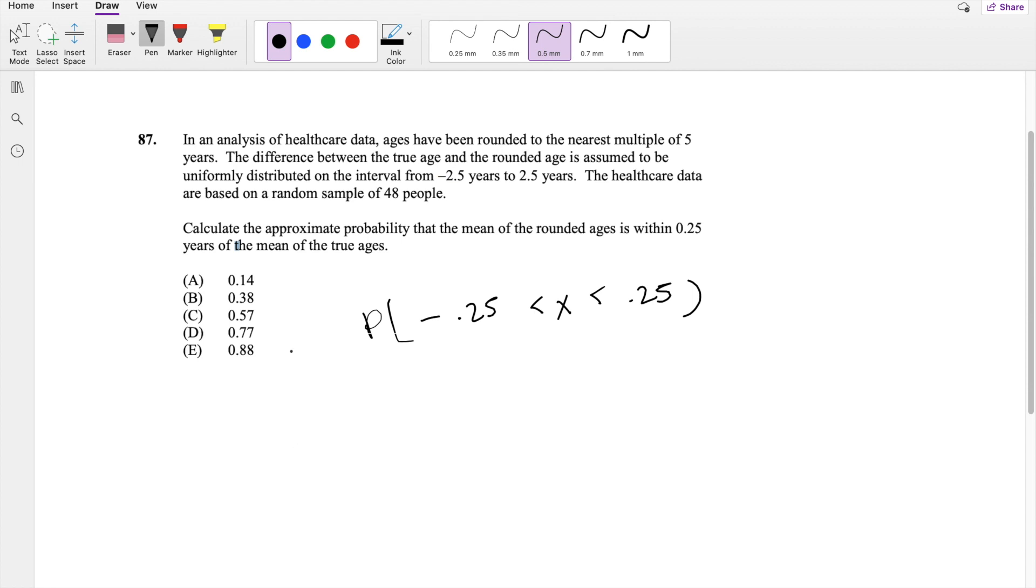So we know for uniform distribution, mean is equal to A plus B over 2. So that's going to be equal to negative 2.5 plus 2.5 over 2, which is just 0.